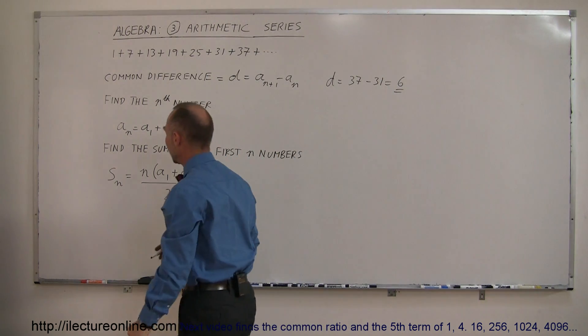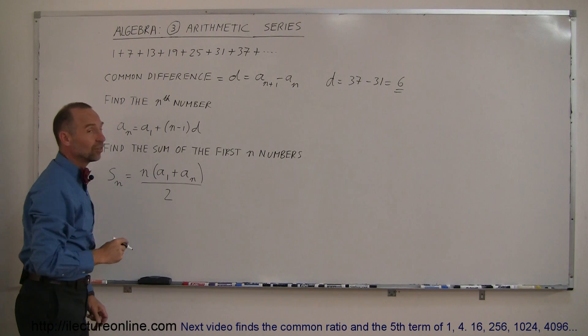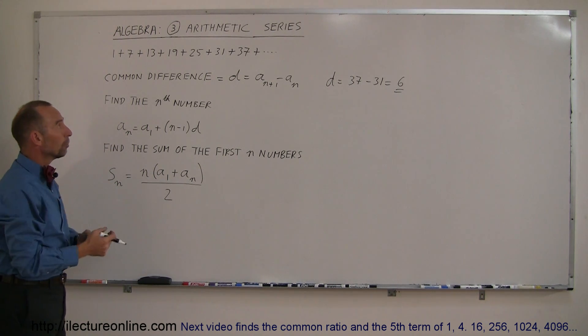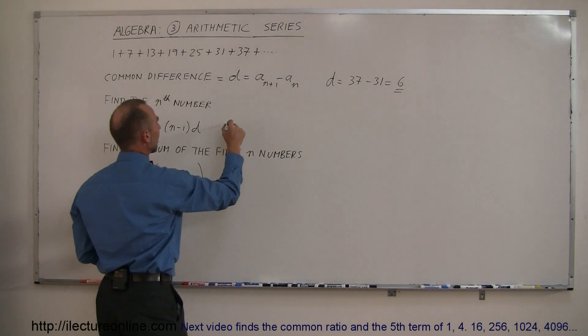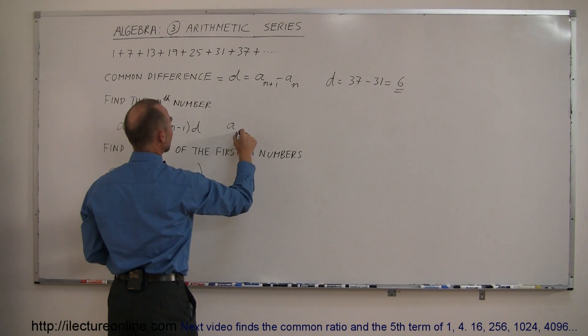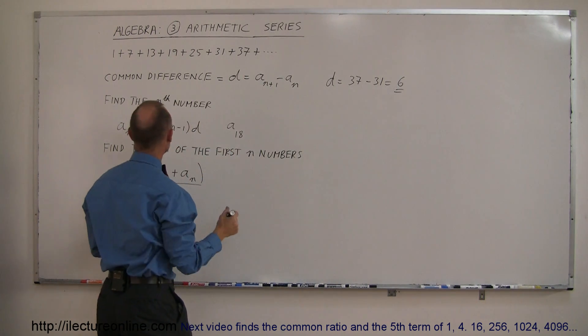So 6 is the common difference in this series. We can still be asked to find the nth number in the series, which can be found like this. So let's say we want to find a sub 18, the 18th number in that series.